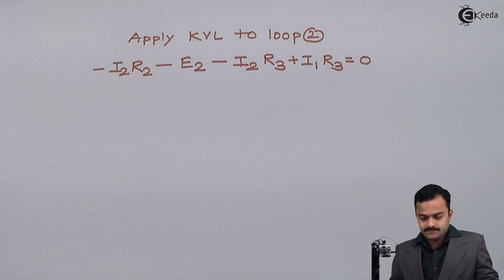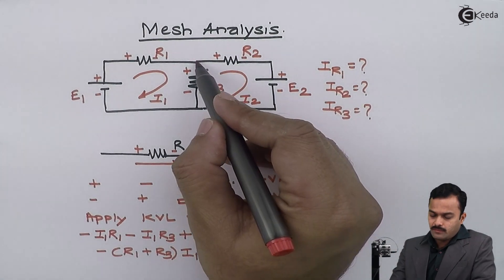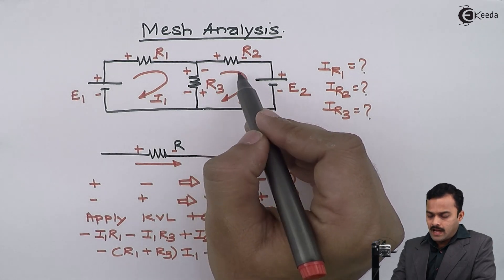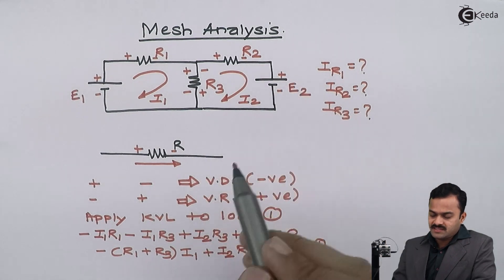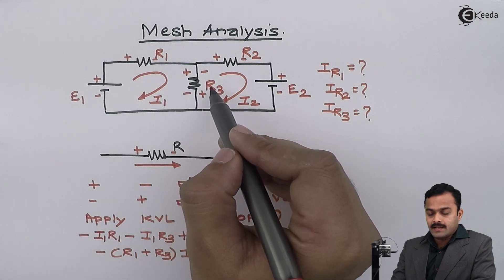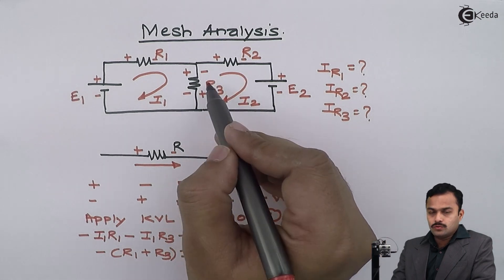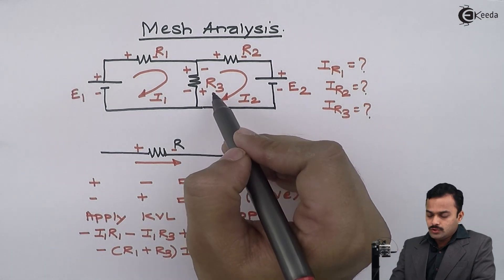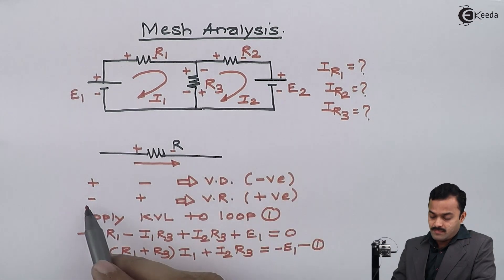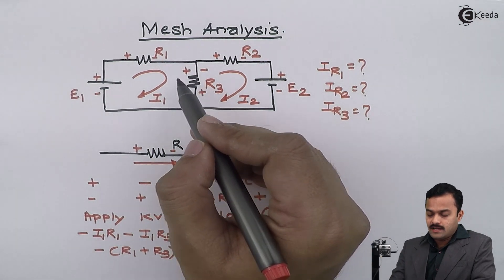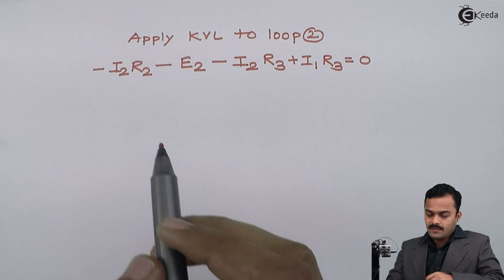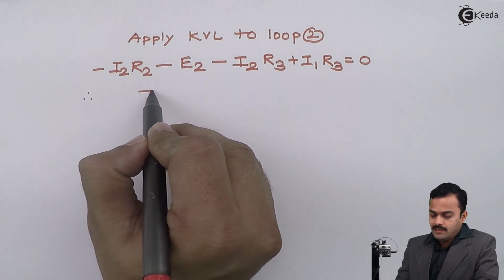Going back to the circuit: starting from this point in loop 2, plus to minus is a voltage drop, so minus I2·R2. The next element is a battery, so I take it as minus E2. For R3, in the direction of I2, plus to minus is a voltage drop — minus I2·R3 — and minus to plus due to I1 is a voltage rise, so plus I1·R3. After simplifying and rearranging terms, I get equation number two.